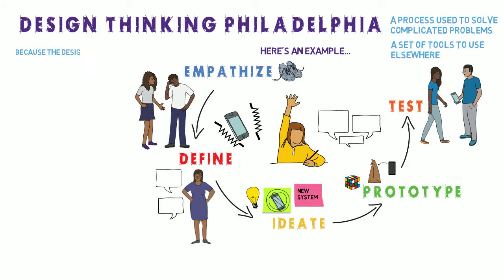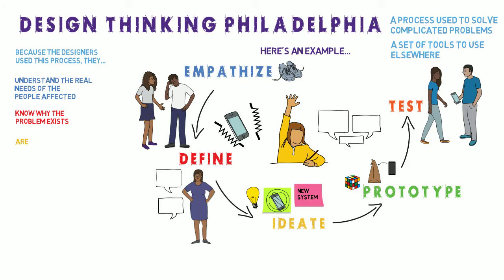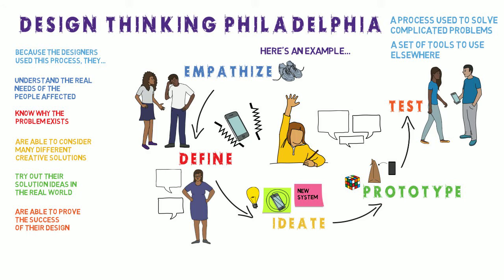By using the design thinking process, the design team is able to understand the real needs of the people affected. They know why the problem exists. They are able to consider many different creative solutions. They try their solutions in the real world, and they are able to prove the success of their design.